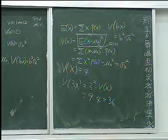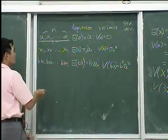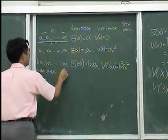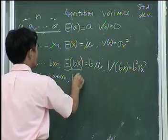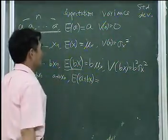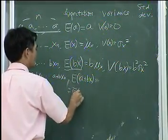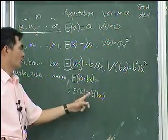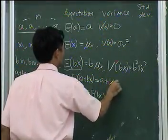Now let us get to another example: A plus BX1, A plus BX2, ... A plus BXn. What is expectation of A plus BX? You can split it: expectation of A plus expectation of BX. Expectation of A is just A, and expectation of BX is B·mu X. So expectation of A plus BX equals A plus B·mu X.